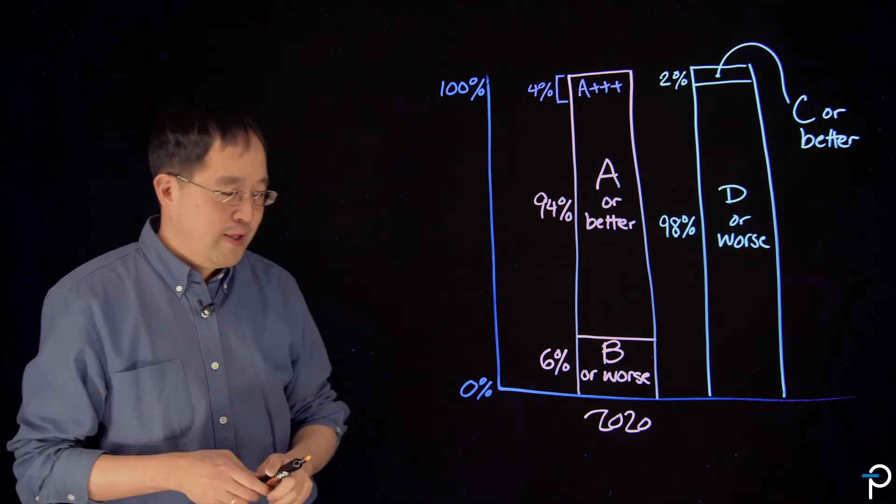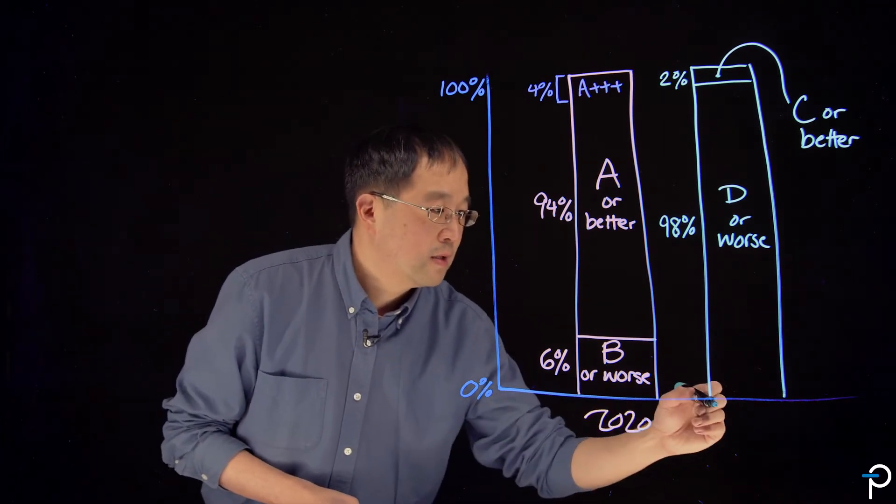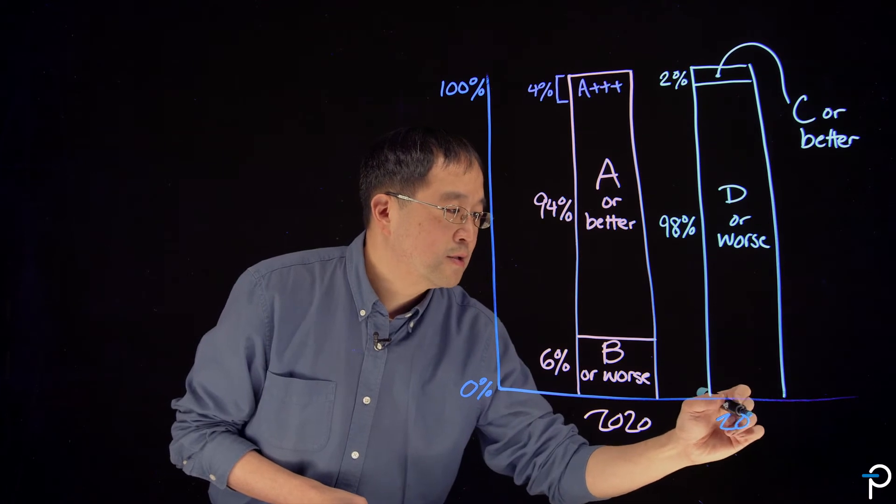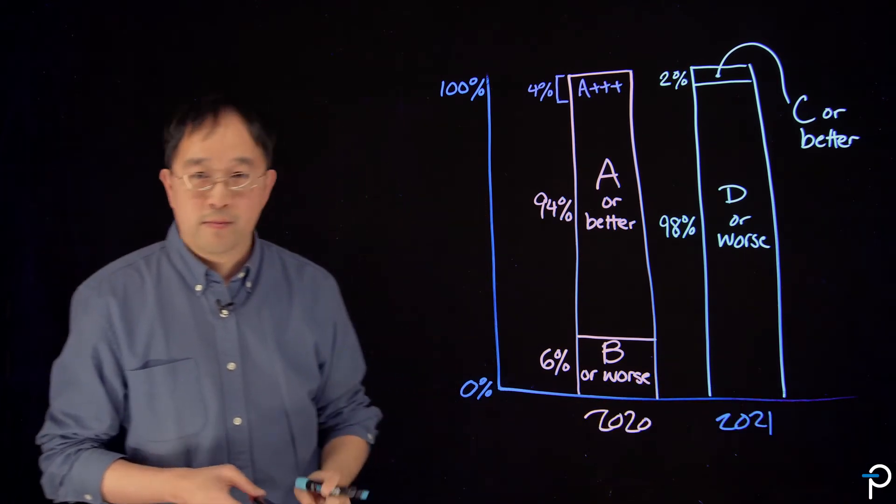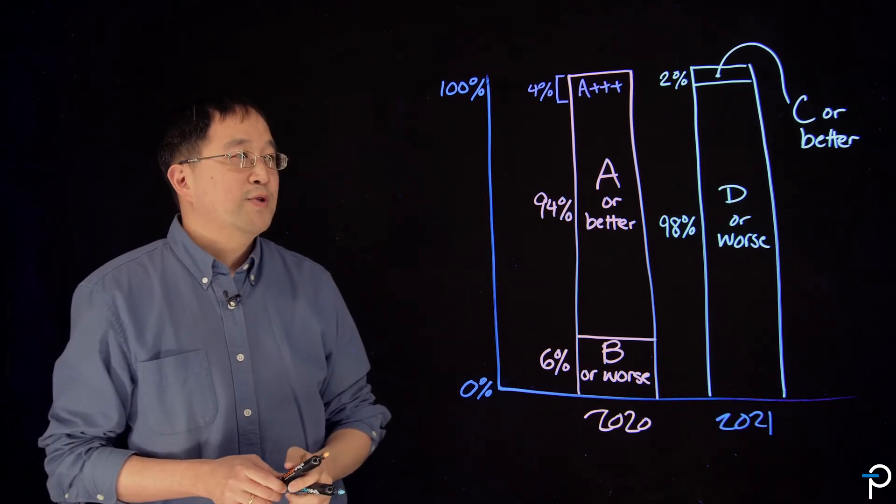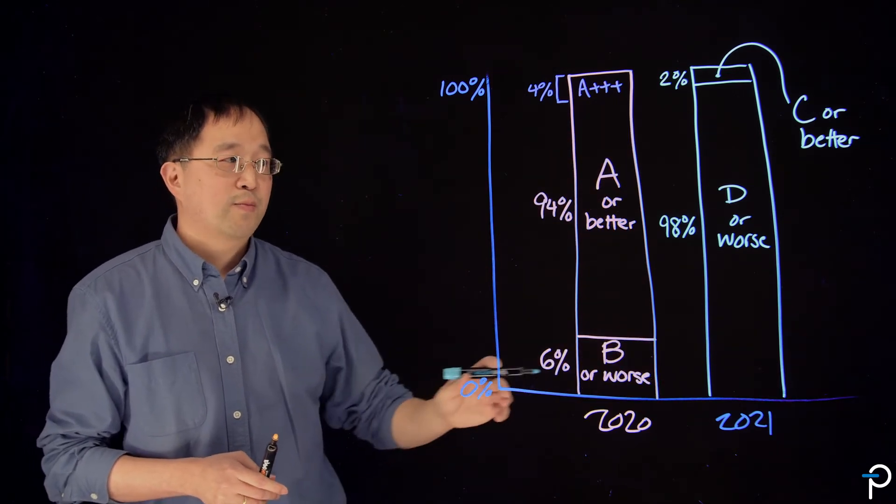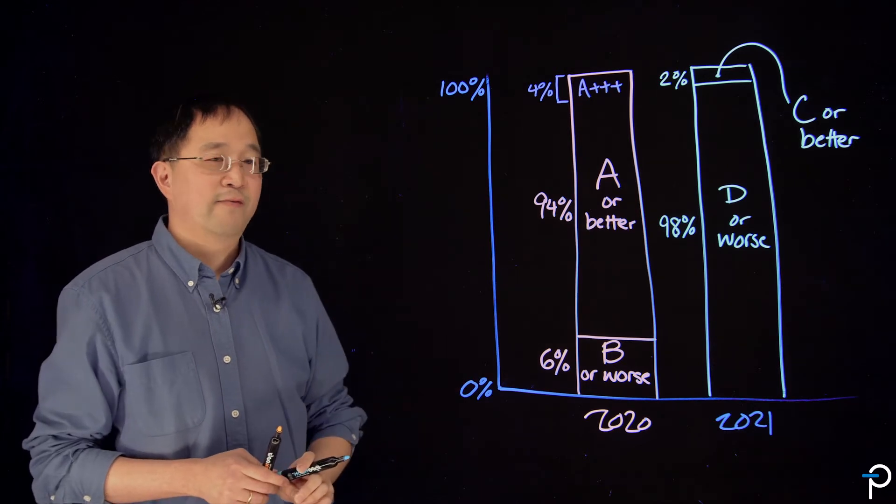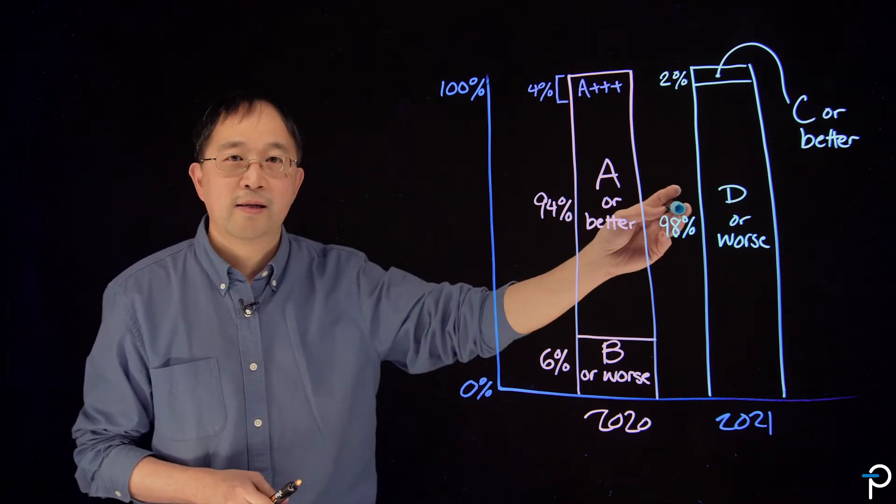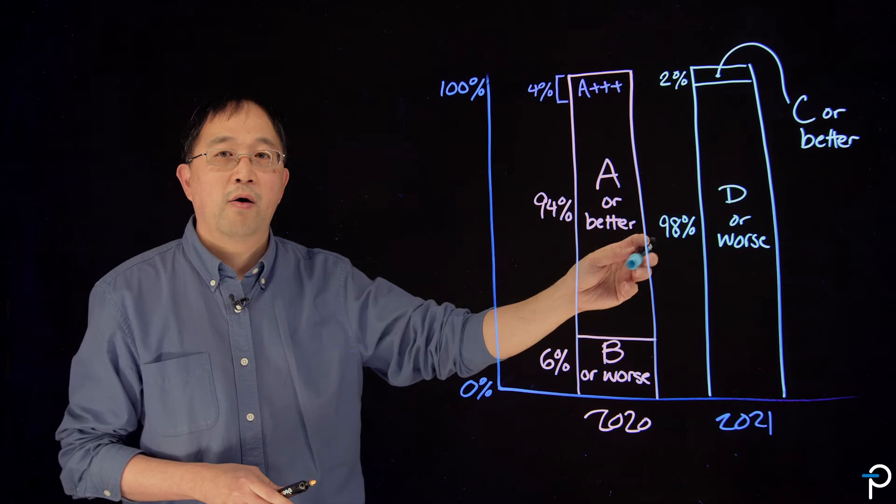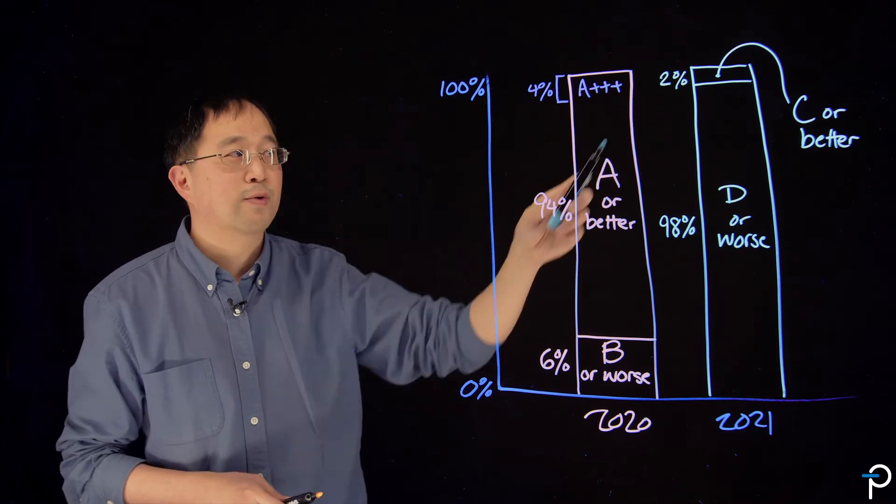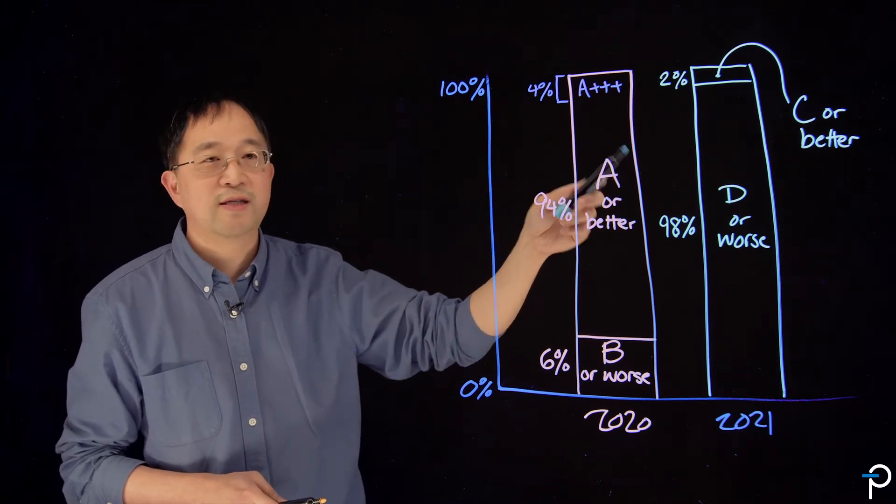So what should we be expecting? In 2021, in March, the labels will shift to an entirely different landscape. Most products, in fact 98% of them, will have a D label or worse. Only 2%, the top 2%, will have a grade of C or better.